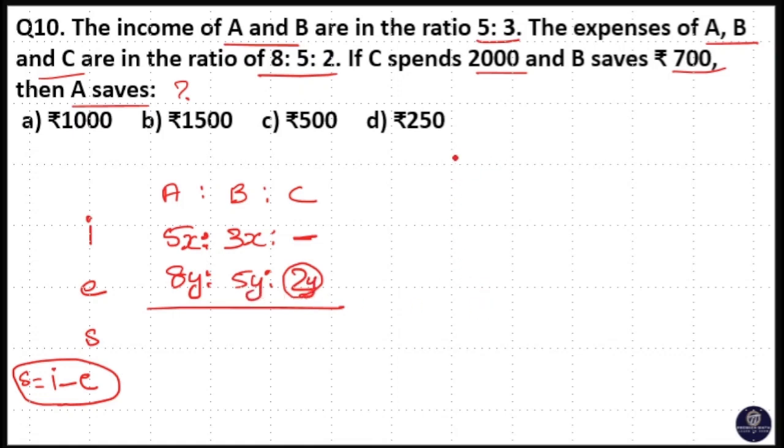So here you know 2y is equal to 2000 because C spends 2000. That means y is equal to 1000. So 5y is equal to 5000.